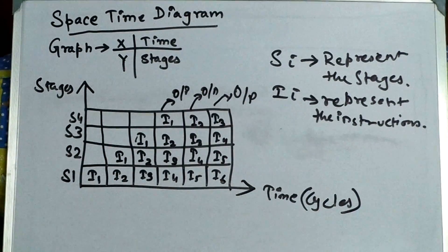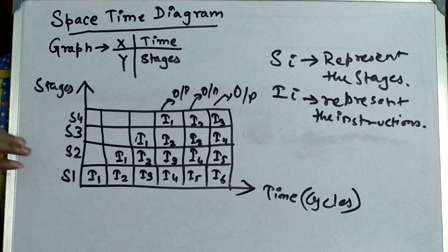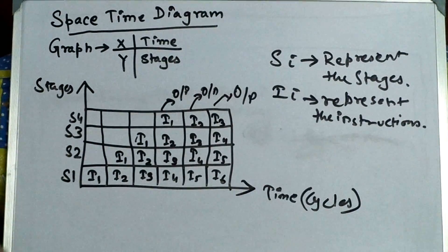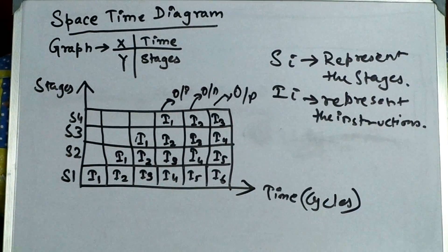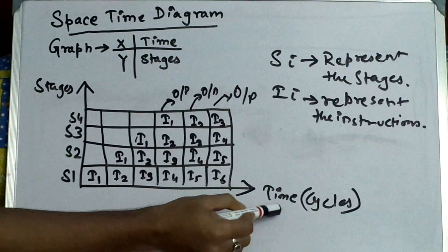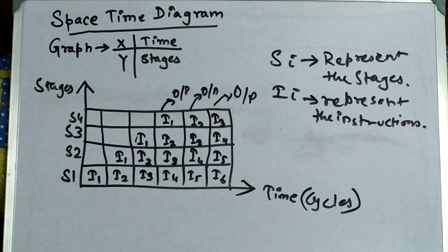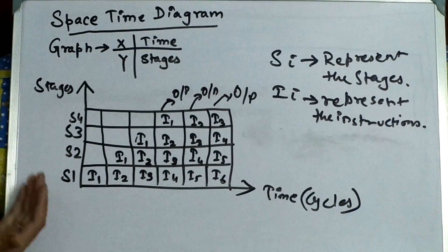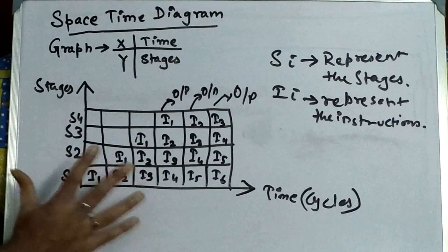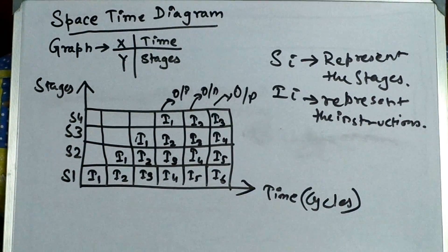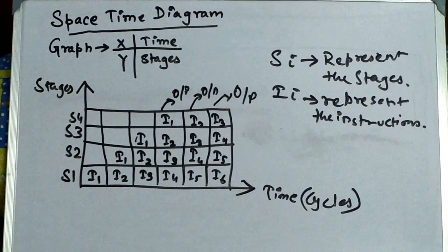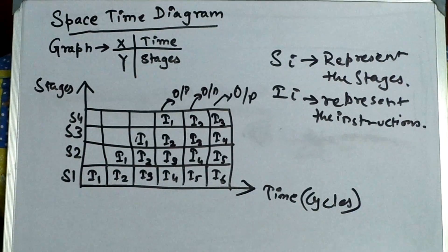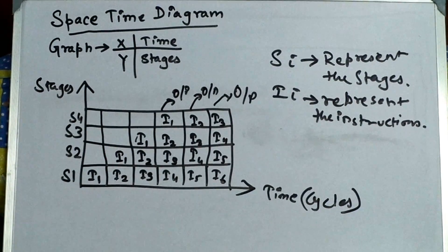These are the outputs. So this is basically the space-time diagram which shows the instructions that have been compiled or executed or being done by the computer with the time and the stage. Now what does it state or what does it show? What we can tell by seeing this space diagram? By seeing this space diagram we can say where a hazard has occurred. I will tell much more things about hazard in my next lectures.